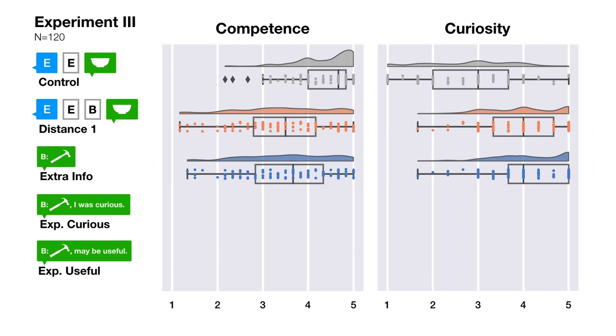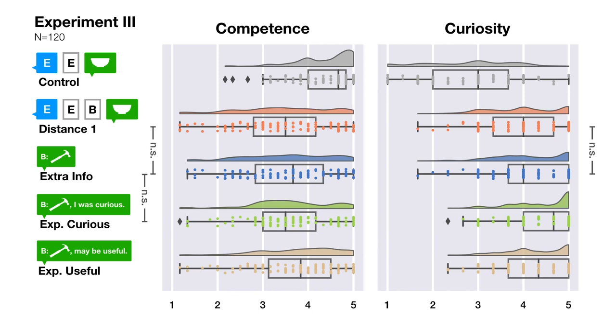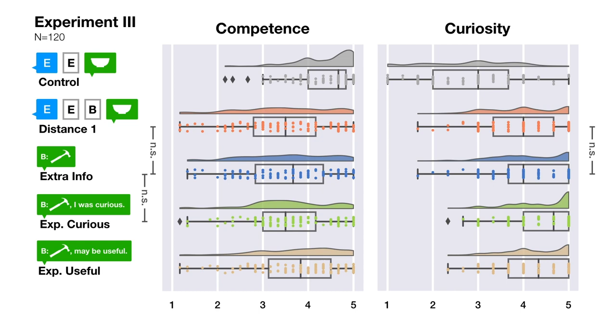Just providing the extra information didn't change the perceived competence or curiosity. Naturally, the robot that said it explored because it was curious was rated the most curious of all, and the one that said it explored because it thought it would be useful was seen as the most competent. Both videos that contained explanations, however, resulted in higher ratings than the robot that detoured without explaining itself.